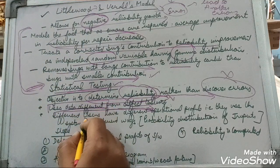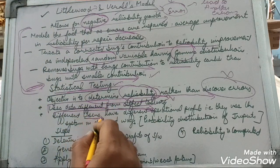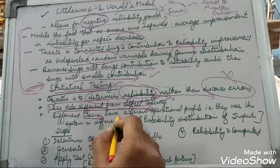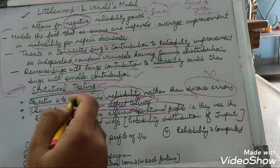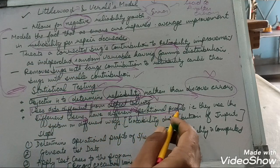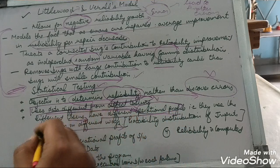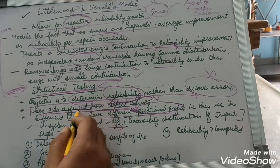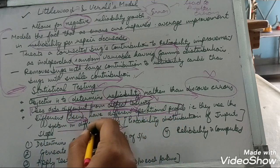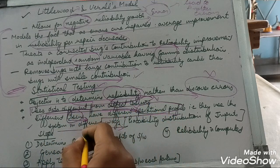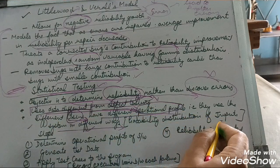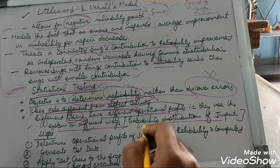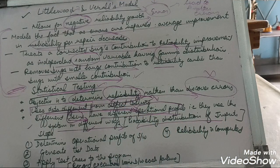Statistical testing uses data different from defect testing. It designs test cases based on the usage of different users, since different users have different operational profiles — that is, they use the system in different ways. Based on the operational profile, the probability distribution of inputs is found.